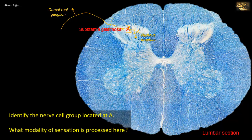These small neurons do not give rise to axons that form a tract. The tract that transmits pain and temperature sensation has its tract cells located in the underlying nucleus proprius. They cross through the anterior commissure then ascend in the spinothalamic tract. So pain and temperature sensations are processed and modified in the substantia gelatinosa, but the tract cells are not located here — it is their dendrites that are located there. The cell bodies of the tract cells are located in the nucleus proprius.